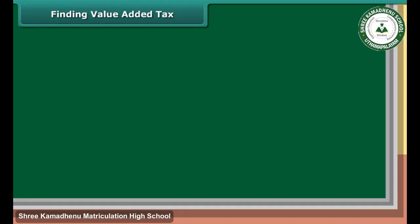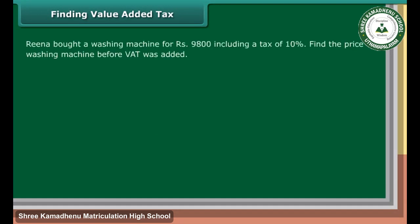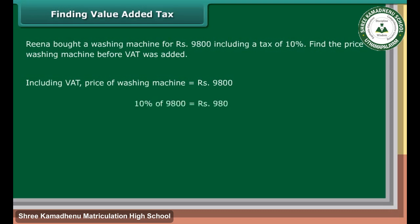Finding Value Added Tax: Rina bought a washing machine for Rs. 9,800 including a tax of 10%. Find the price of the washing machine before VAT was added. Including VAT, price of washing machine is equal to Rs. 9,800. 10% of 9,800 is equal to Rs. 980. Price before VAT added is equal to Rs. 9,800 minus 980, which is equal to Rs. 8,820.